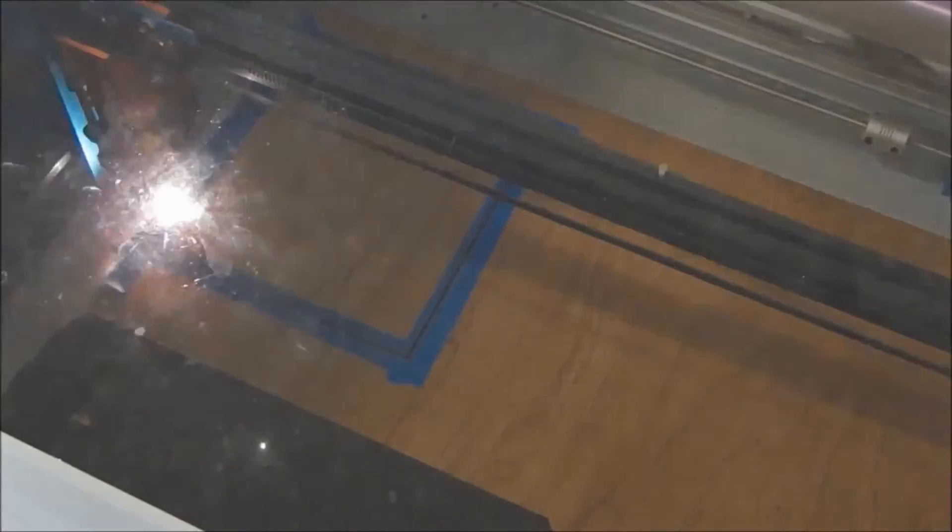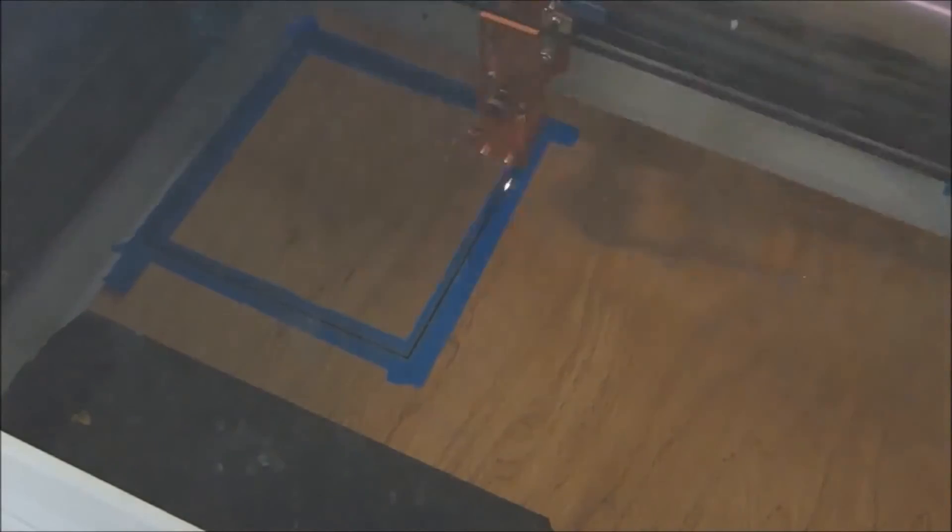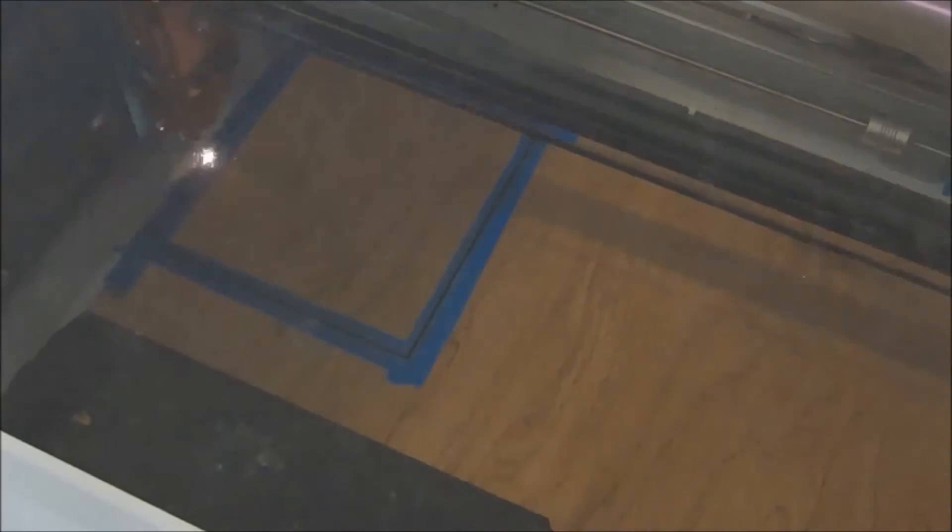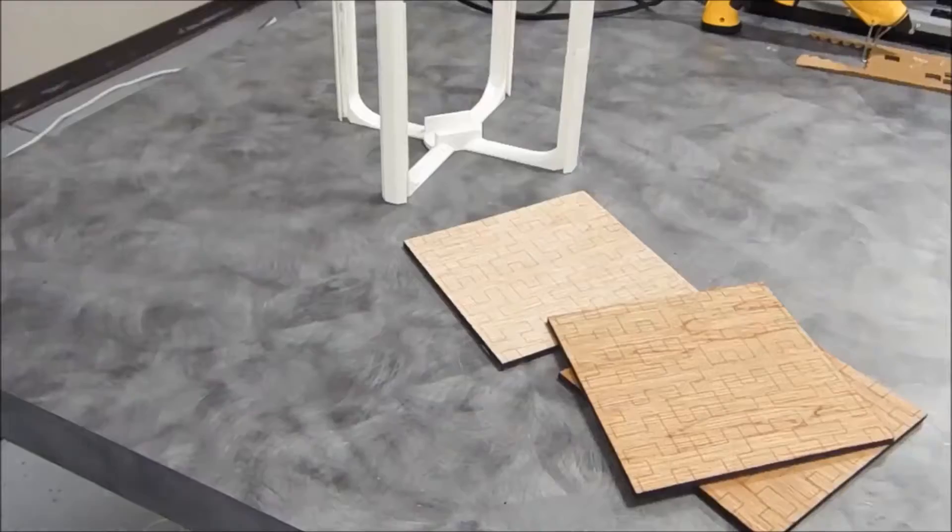After quickly laser cutting and engraving quarter-inch birch plywood panels for the sides and the top, the lamp can be easily assembled by sliding the panels into the frame.